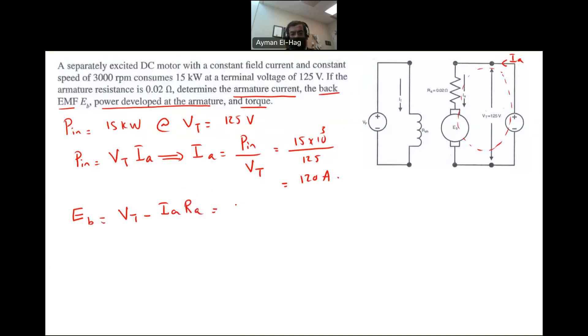Your VT is equal to 125 minus IA 120 times 0.02, and this will give me a total voltage equal to 122.6 volt. So this is my back EMF. This is the voltage that will counter the V terminal and develop during the rotational of the armature in the field. So it will have opposite polarity than the original voltage source, which is VT.